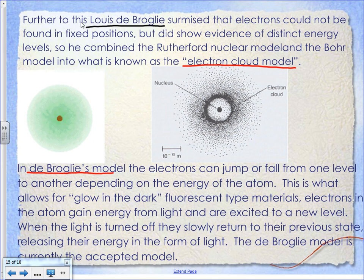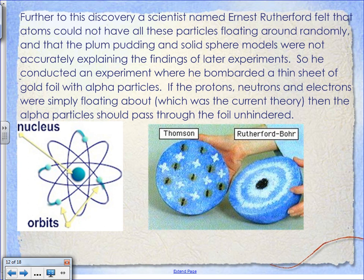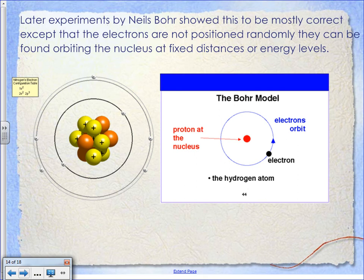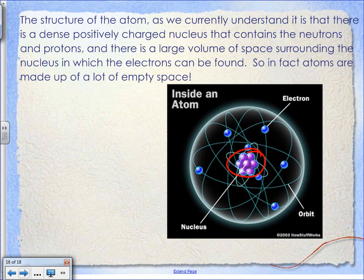So we've talked about four models: the solid sphere, which was Dalton's idea; the plum pudding, which was Thomson's idea; Rutherford's model - a nucleus with electrons orbiting at fixed distances evenly spaced around it; Bohr's model - like planets orbiting the sun; and de Broglie's electron cloud. The structure of the atom as we currently understand it is a dense, positively charged nucleus in the center, with very tiny negatively charged electrons floating around the outside. The atom is really made up of a lot of empty space.